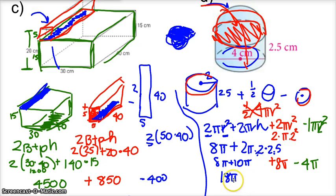I really like problems with π because there's not a whole lot of extra calculation. 18 plus 8 minus 4 is 22π centimeters squared.